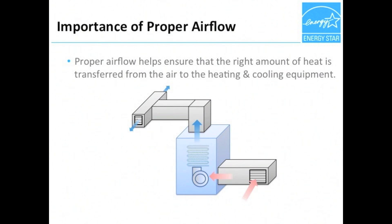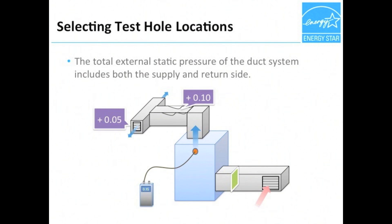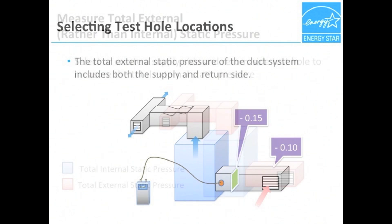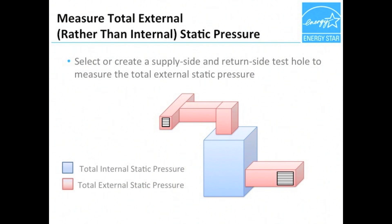Static pressure can be used to determine the airflow of the HVAC fan, so let's discuss how you actually measure the static pressure. Perhaps the most challenging part of this process is determining where to locate the holes to measure static pressure. To get the total external static pressure, you need to measure the positive pressure on the supply side of the fan and the negative pressure on the return side of the fan. This means you'll need to make two holes or use existing holes.